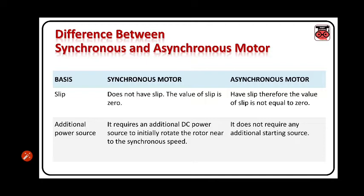Next is additional power source. A synchronous motor requires an additional DC power source to initially rotate the rotor near to the synchronous speed. In an asynchronous motor, it does not require any additional starting torque.